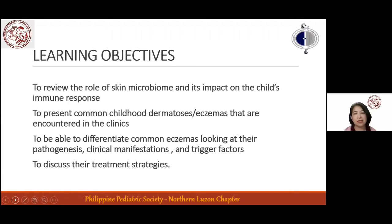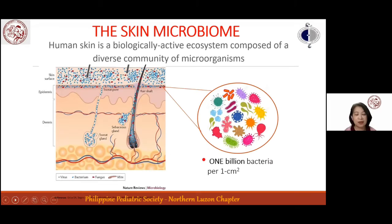The skin microbiome refers to the diverse community of microorganisms, including billions of beneficial and harmful bacteria coexisting on the skin surface. It has been estimated that 1 billion bacteria inhabit just 1 cm² of human skin. The skin microbiome prefers a relatively acidic environment, a pH of around 5, which also inhibits the growth of pathogens.